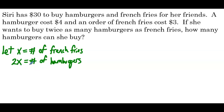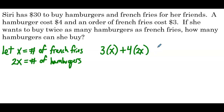To figure out how much she would spend, we take how many she ordered of each and multiply by the cost. French fries cost $3, so we have 3 times x orders of french fries. Hamburgers cost $4, so 4 times 2x orders of hamburgers. She only has $30 to spend, so we need this value to be less than or equal to $30. There are no key words like at most or less than in this problem, but in context, the amount she owes must be less than or equal to the amount she has.